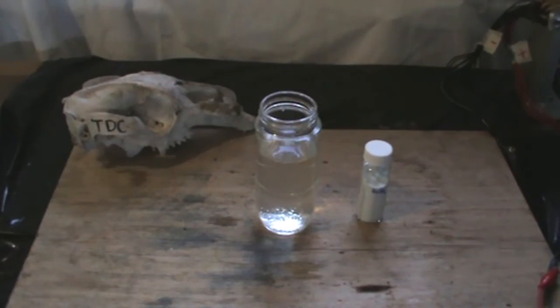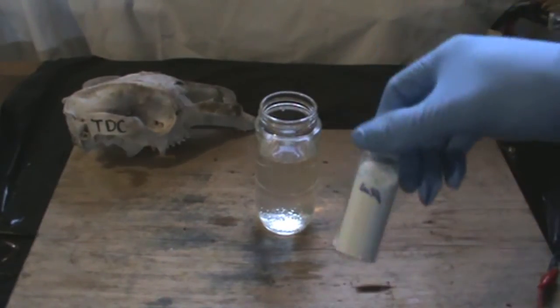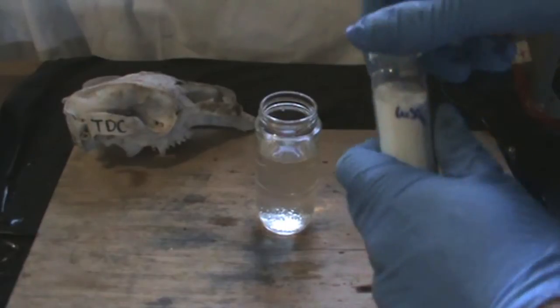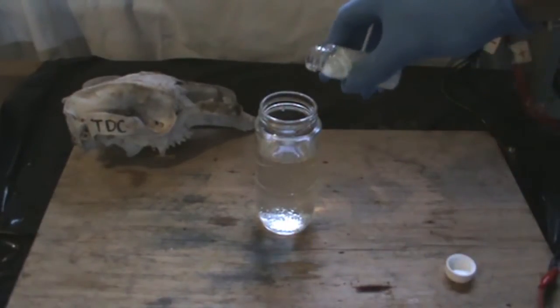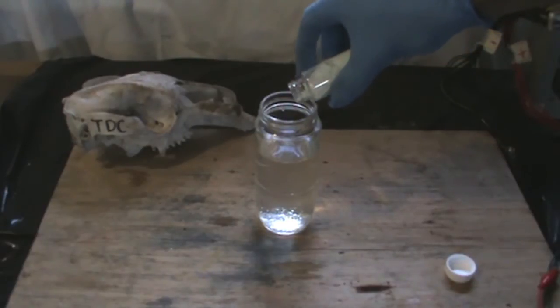To start, get the container holding the water and pour in the copper sulfate, making a saturated solution of copper sulfate. It will take a while for everything to dissolve, so I'll skip over that part.